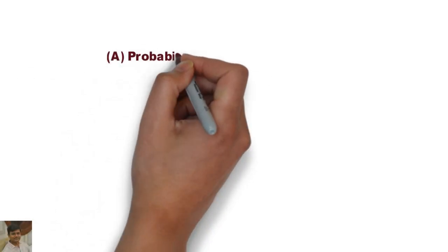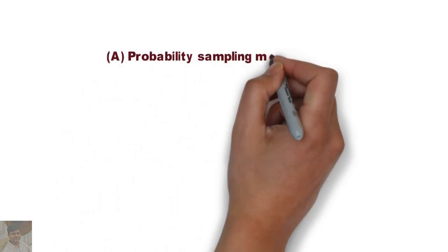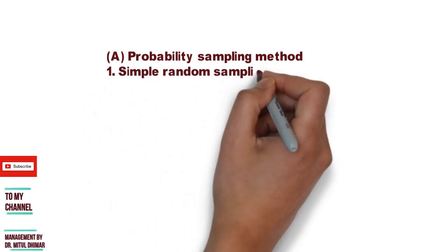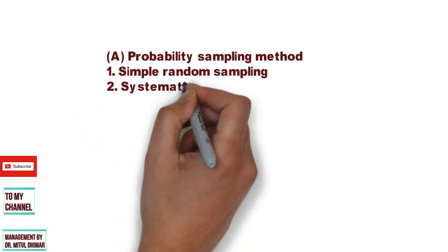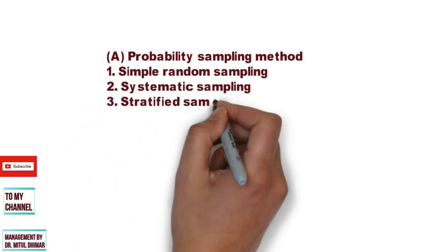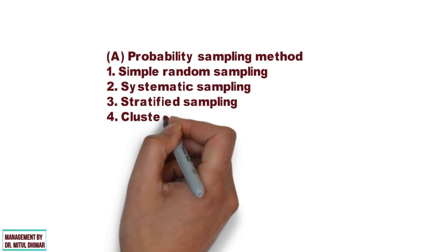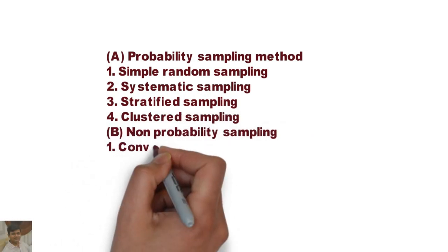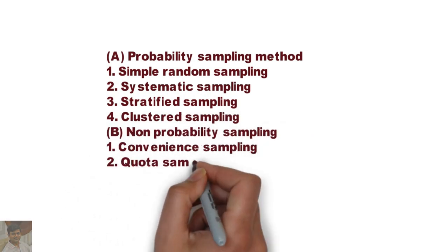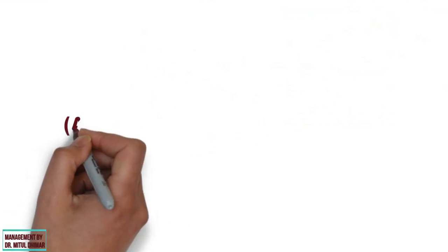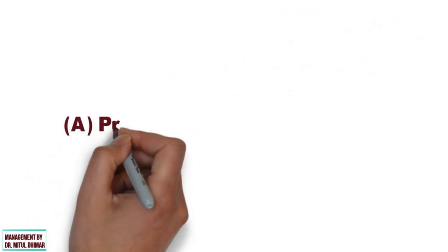We are going to study the following sampling methods in detail. Category A: Probability Sampling Method.